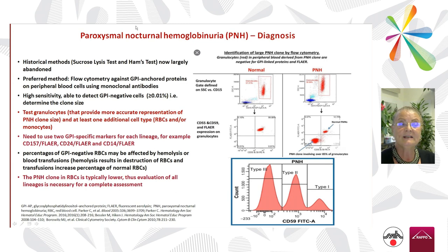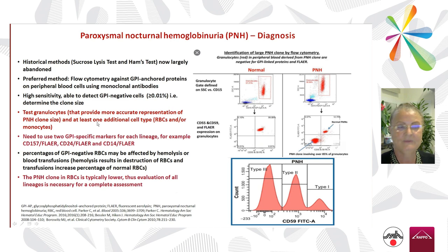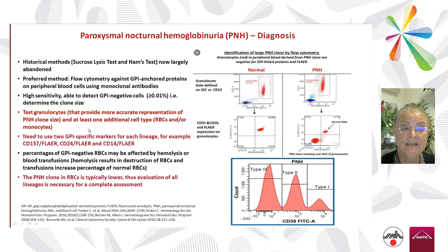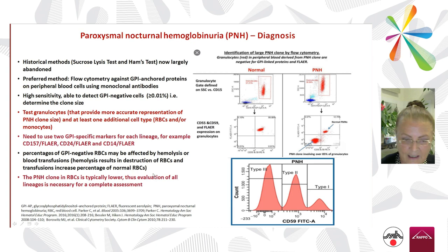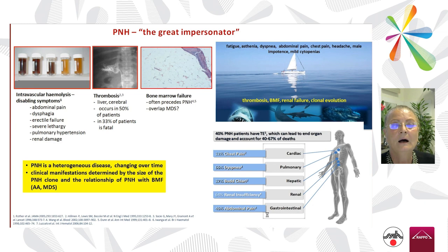The diagnosis was in the past made with the sucrose lysis test and Ham test, now abandoned. Flow cytometry with FLAER, which detects GPI-anchored proteins using monoclonal antibodies, is now the test of choice. It is important to test granulocytes and at least one additional cell type — better monocytes and red cells — keeping in mind that the percentage in red cells may be affected by hemolysis or blood transfusions.